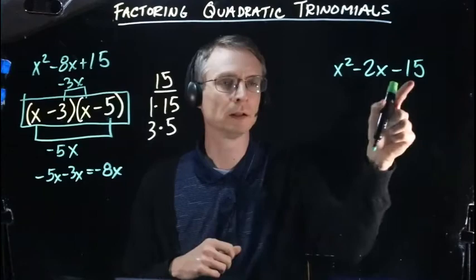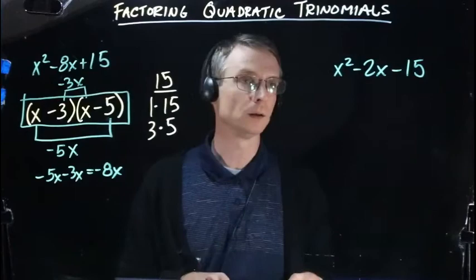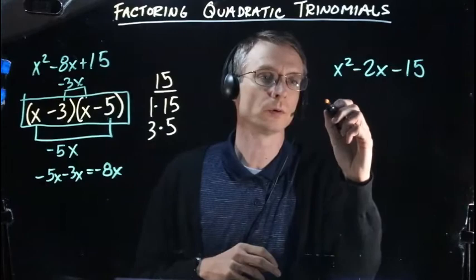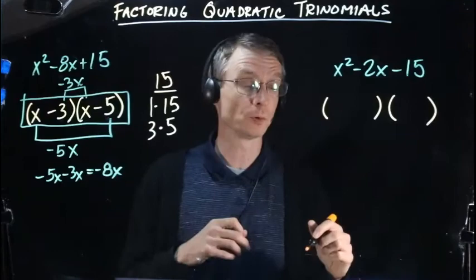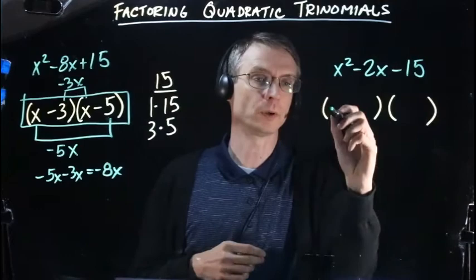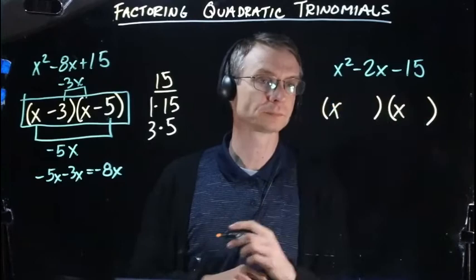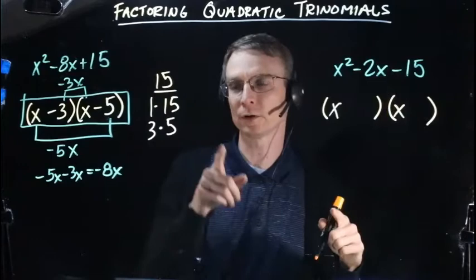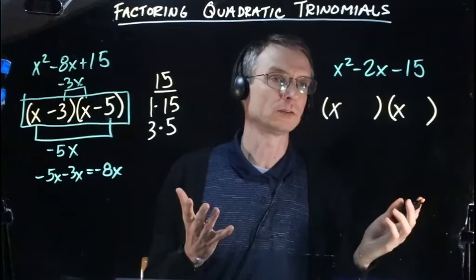Now let's try a different one: x² - 2x - 15. We look for greatest common factor - there isn't one. So we break this into two binomials with x times x for x². We need to factor 15, which has factors 1 and 15, or 3 and 5. Again, I'll try the ones closest together.